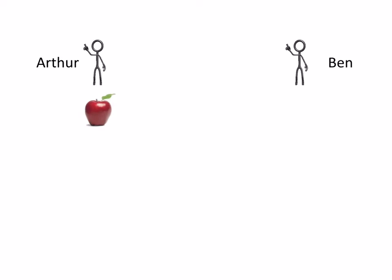This is where Arthur, who has an apple, meets Ben, who has a banana. Arthur would like Ben's banana, and Ben would like Arthur's apple, so they agree to trade.